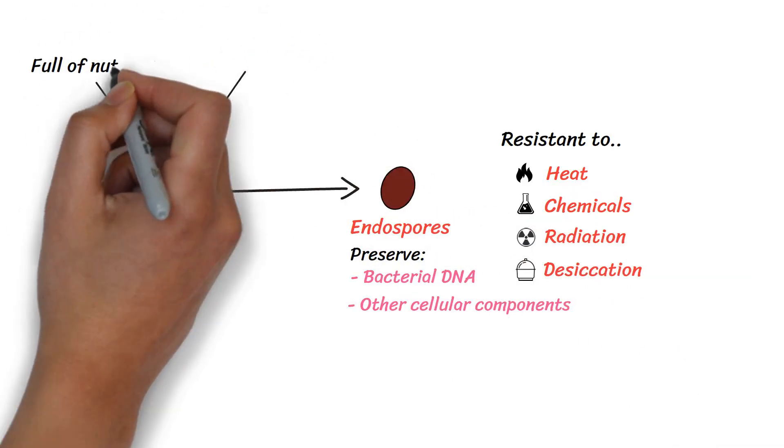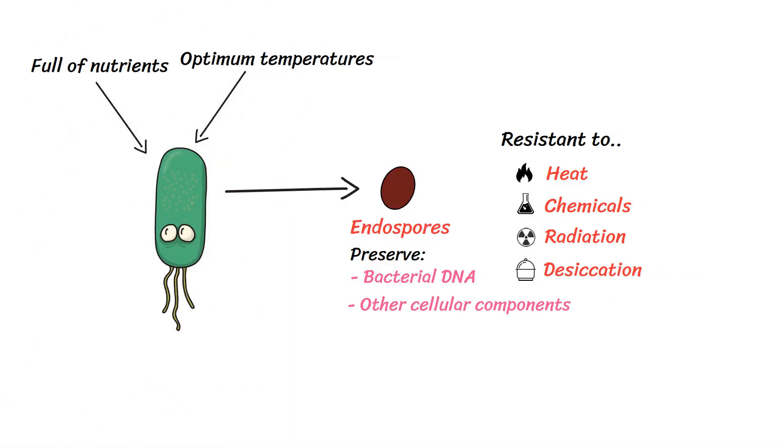When conditions become more favorable for growth and reproduction, the endospore will transform into a vegetative cell.